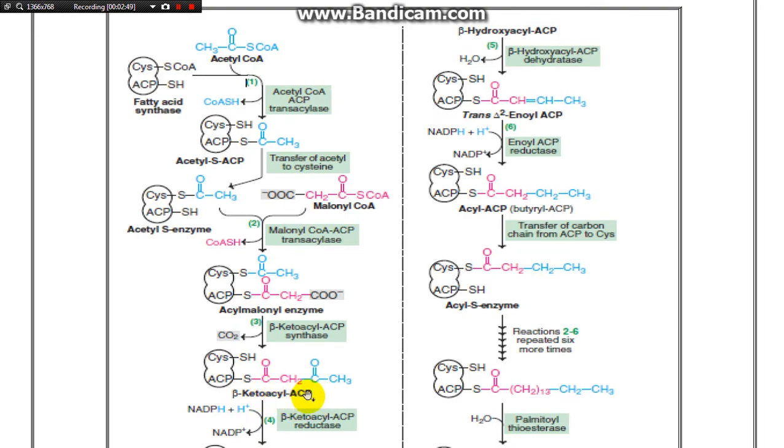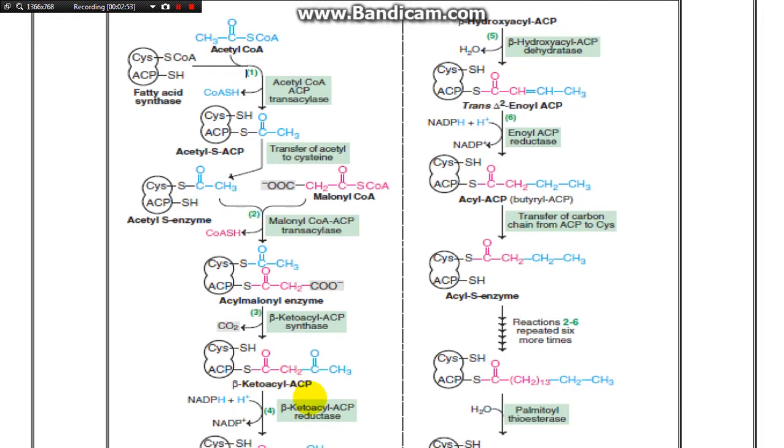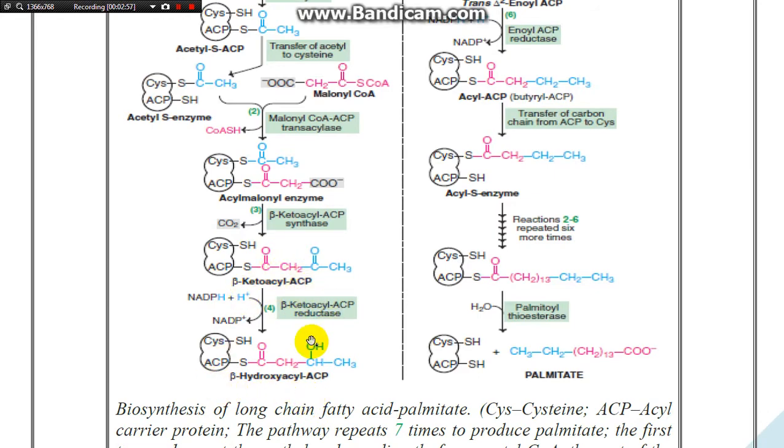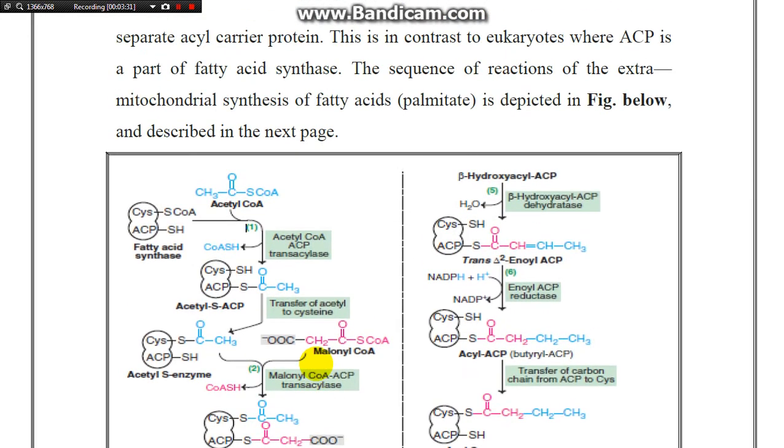Beta-ketoacyl ACP reductase reduces this to beta-hydroxyacyl ACP, converting the carbonyl group to a hydroxyl group. Then beta-hydroxyacyl ACP dehydratase removes one molecule of water.